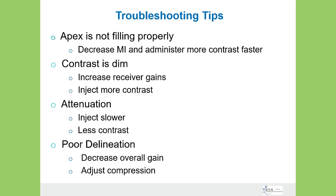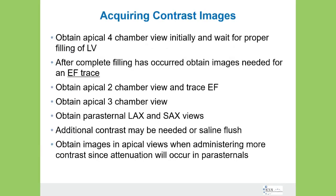Some troubleshooting tips — these are usually sonographers panicking about not getting adequate contrast filling. If the apex is not filling properly, make sure your mechanical index is set properly; you may need to inject more contrast or inject faster. If the contrast is dim, check your receiver gains — maybe increase those, or inject more contrast. If you have attenuation, inject slower or give less contrast, because too much contrast can also cause attenuation. If you have poor delineation of the endocardial border, decrease the overall gain or adjust the compression.